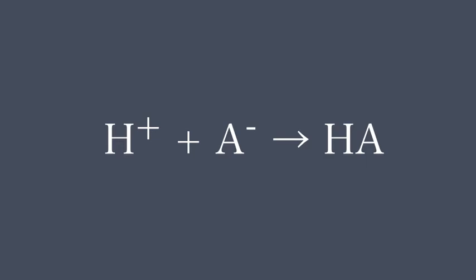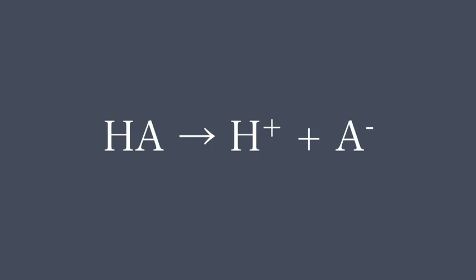When a strong base, such as sodium hydroxide, is added, the hydroxide ions react with the free hydrogen ions to form water, reducing the hydrogen ion concentration. As a result, more HA molecules dissociate until the hydrogen ion concentration is once again at equilibrium.